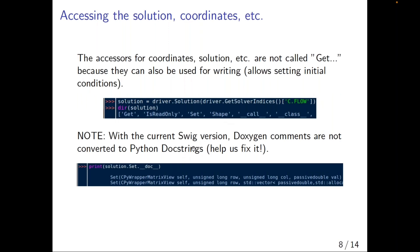One unfortunate thing at the moment is that the current SWIG version doesn't translate the Doxygen comments we have in C++ into Python docstrings. So if you try to look at the Python docstring, it just gives you the signature of the function, which is not ideal — but you can help us fix it.